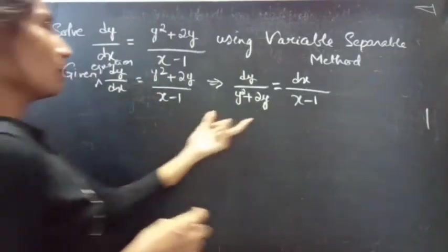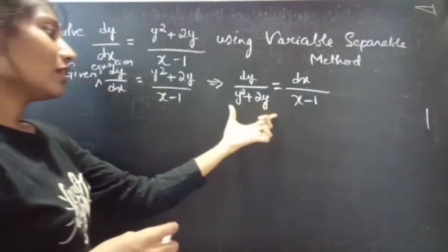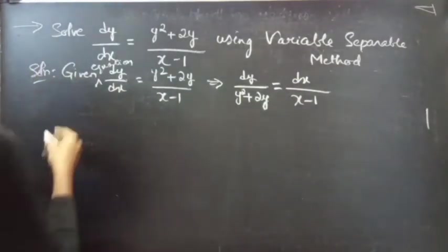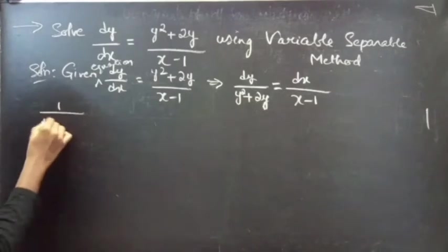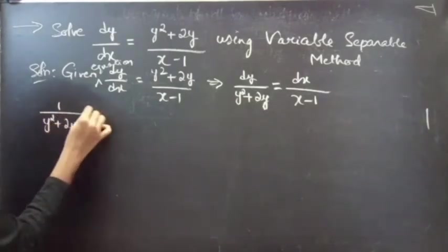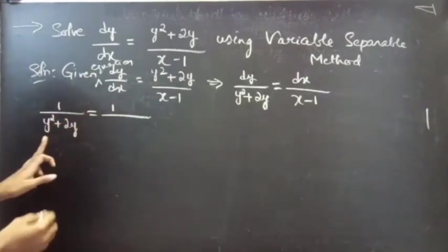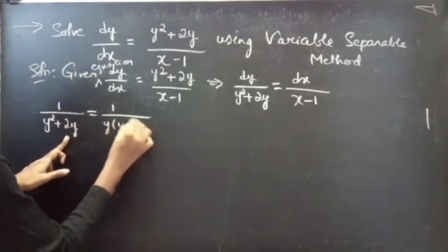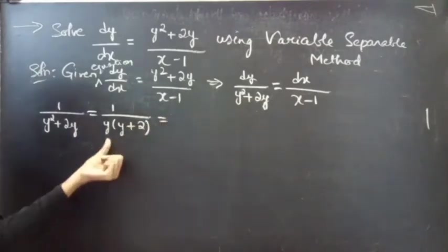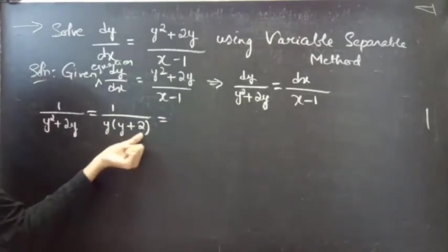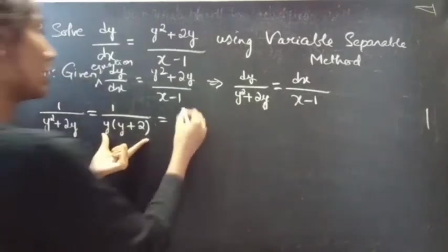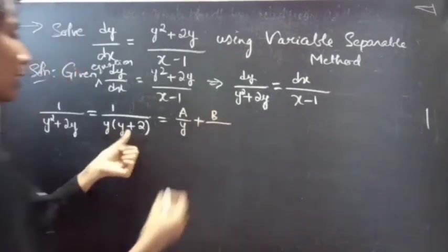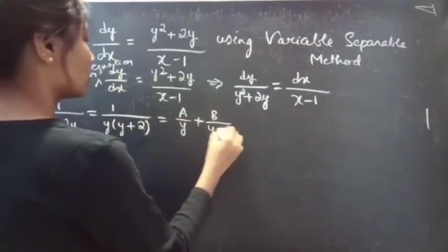Using the partial fraction method we can write this fraction into partial fractions. Let's consider 1 / (y² + 2y). You can take y common from these two terms to get y(y + 2). Since y and y+2 are both linear, you can write this as A/y plus B/(y+2).